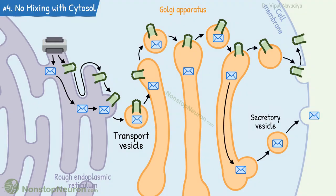The next point: throughout the transit, no mixing occurs between cytosolic and luminal content. Secretory proteins are always confined in a membrane-closed structure. These structures, in order, are the rough endoplasmic reticulum, transport vesicles, Golgi apparatus, and secretory vesicles.